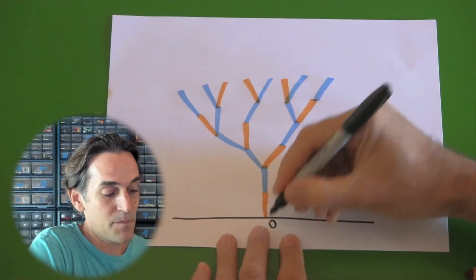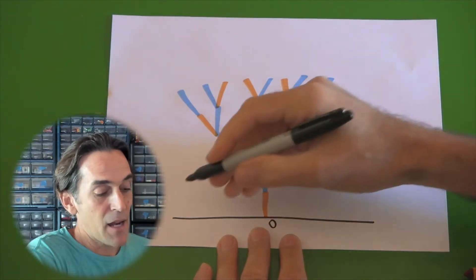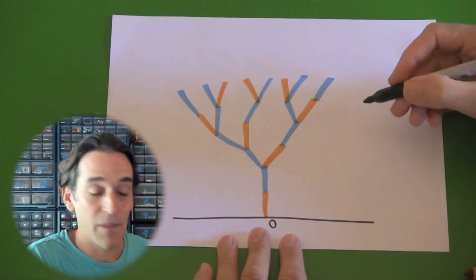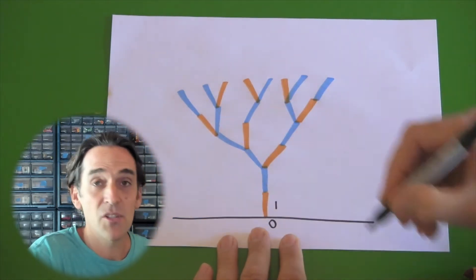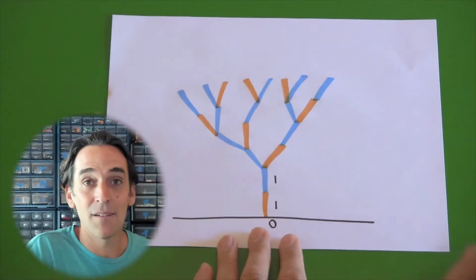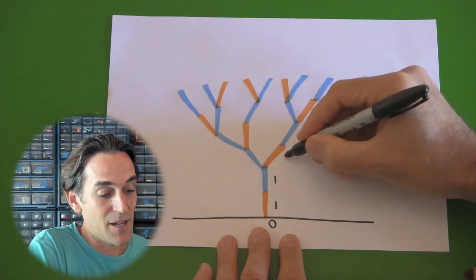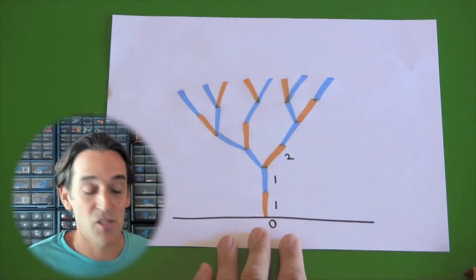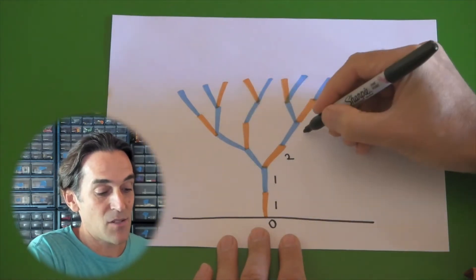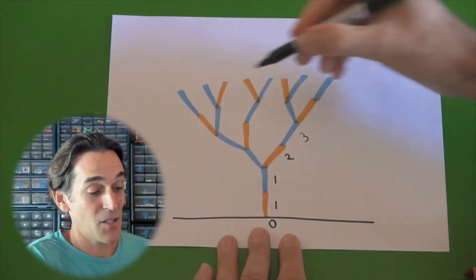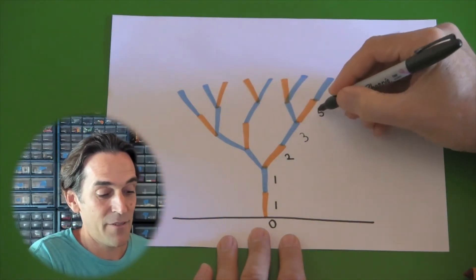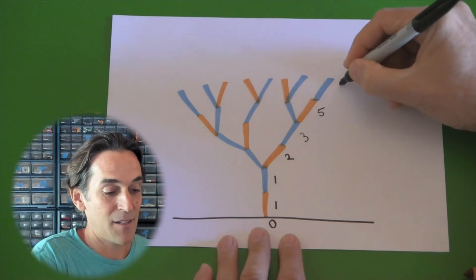We can see if we can find the Fibonacci sequence in here. If I look at the bottom starting with zero, and I'm looking at every level of drawing that I do here, there's only one branch here, one again. Then at the next level, there's two as it branches. The next level after that is three. And as it goes up, five and eight.